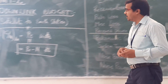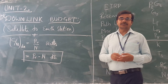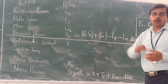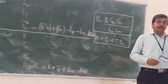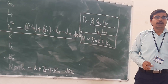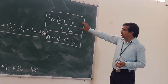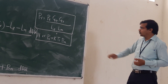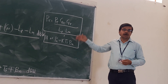Downlink budget means we are considering the signal from the satellite to the earth station. When going for the downlink budget, the parameters will remain the same as in the uplink budget. But we should know two basic formulas — one related to received power and one related to noise power.